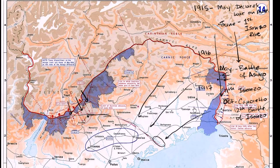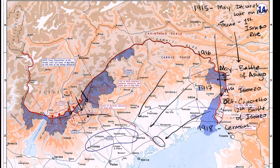This takes us into 1918. At this point the Germans are planning their last-ditch spring offensive and tell the Austro-Hungarians they should be able to deliver the knockout blow to the Italians. The Germans redeploy to the Western Front — needing to act before the Americans can reinforce the Allies — and essentially leave the Austro-Hungarians to try to take out the Italians.